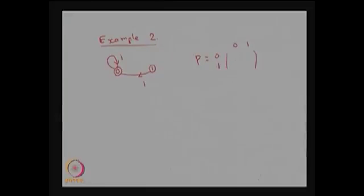So the one-step transition probabilities are: 0 to 0 is 1, 0 to 1 is 0, 1 to 0 is 1, and 1 to 1 is 0. You can verify this is a stochastic matrix because each element lies between 0 and 1 and the row sum is 1. Therefore this is a stochastic matrix. The state transition diagram and the one-step transition probability matrix are one and the same.